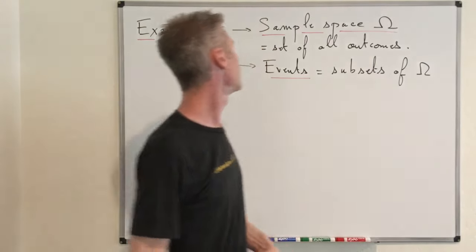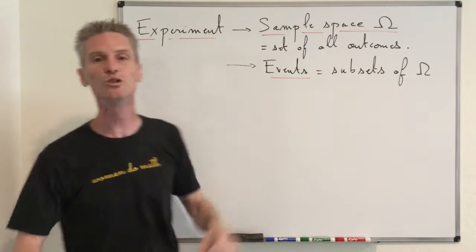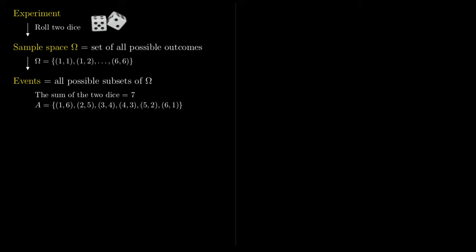An example of an event in the case of rolling two dice would be that the sum is equal to seven. Indeed, the event that you get a sum of seven is a set A equal to the outcomes {(1,6), (2,5), (3,4), (4,3), (5,2), (6,1)}. You can see that this set A is a subset of our sample space Omega.